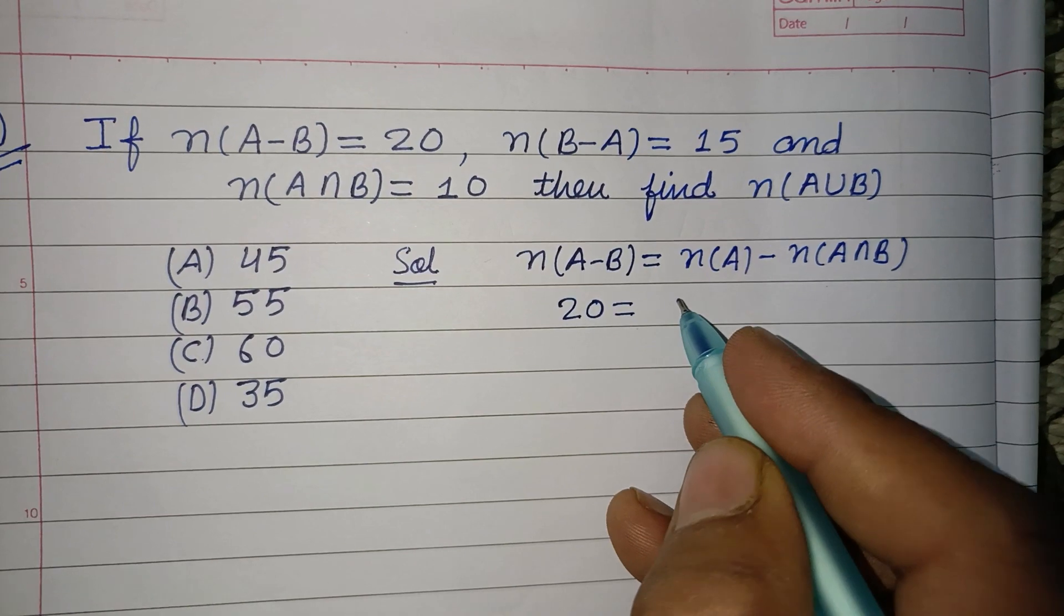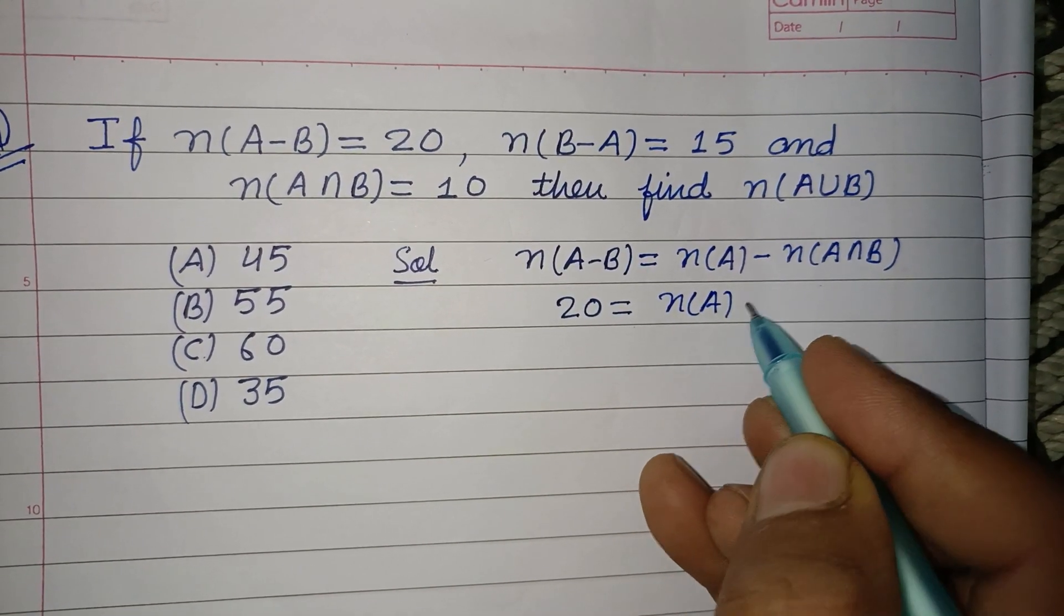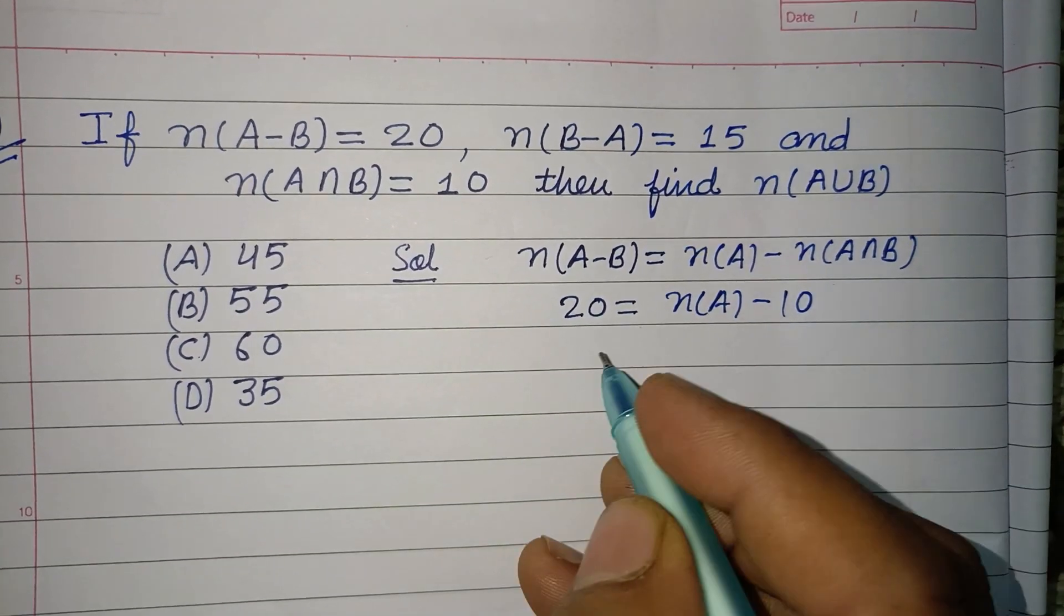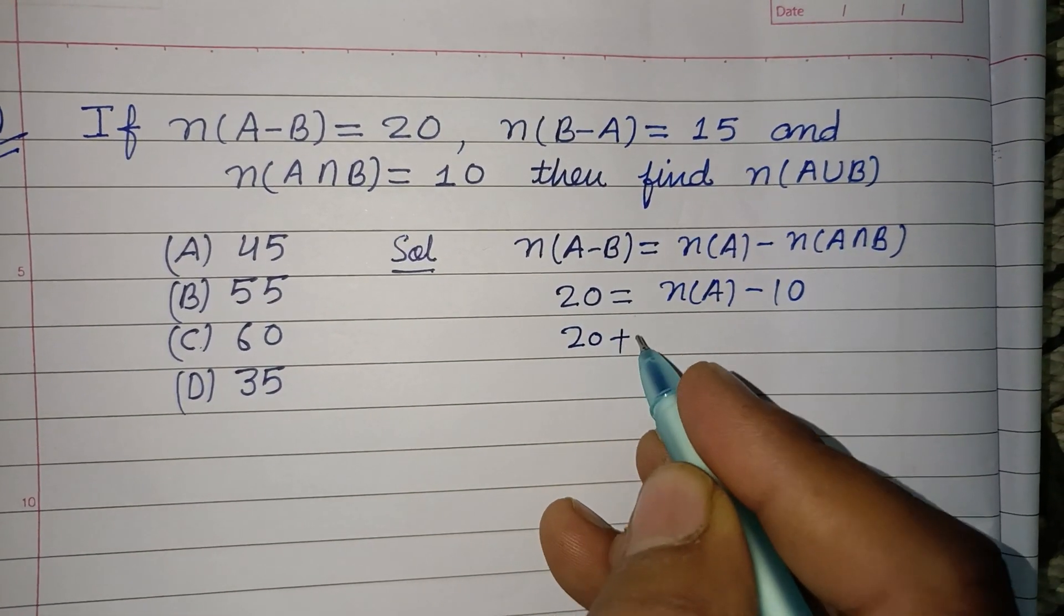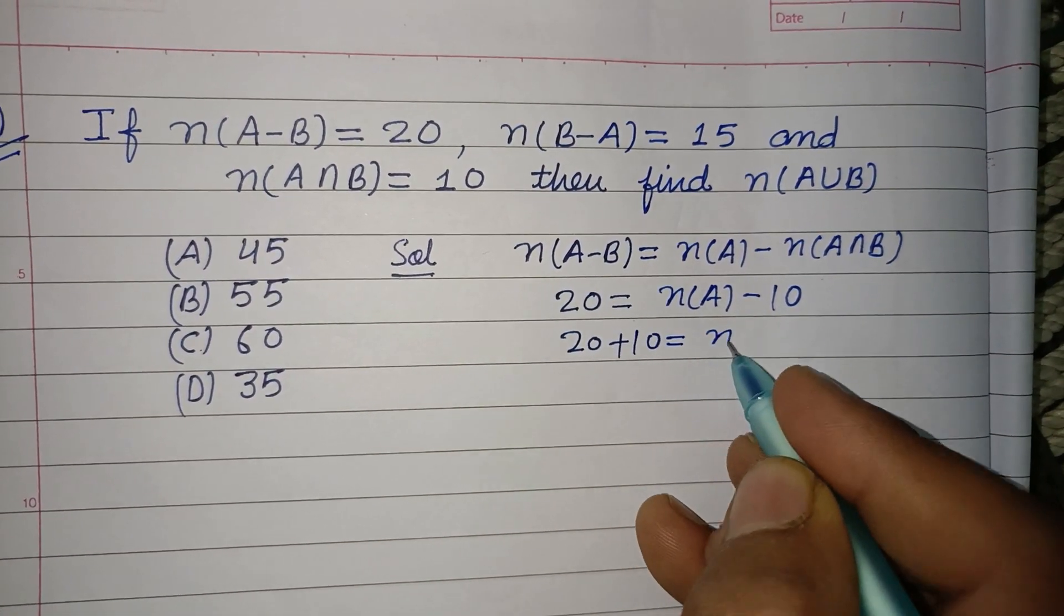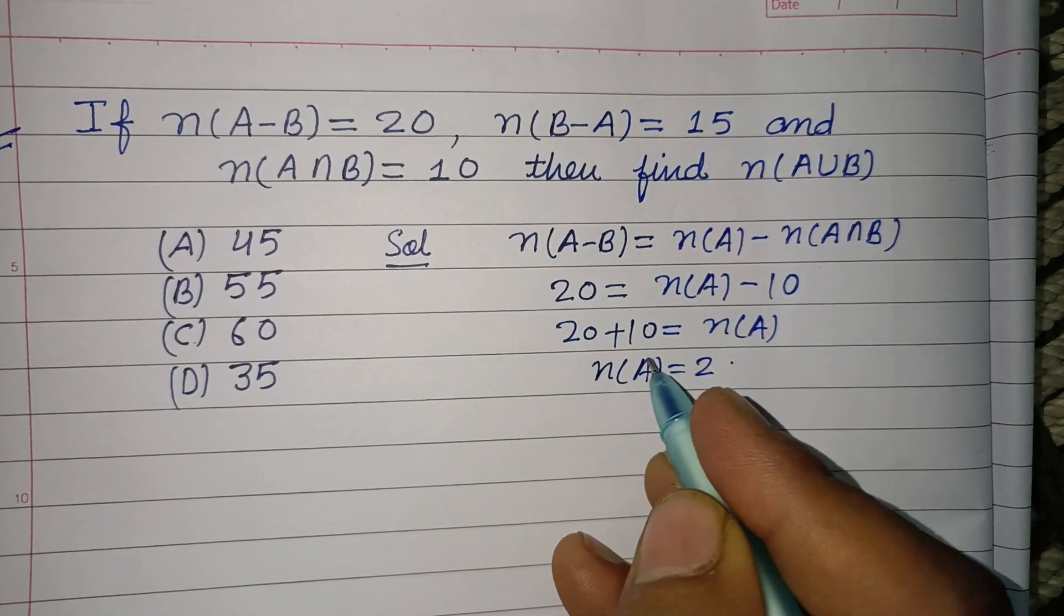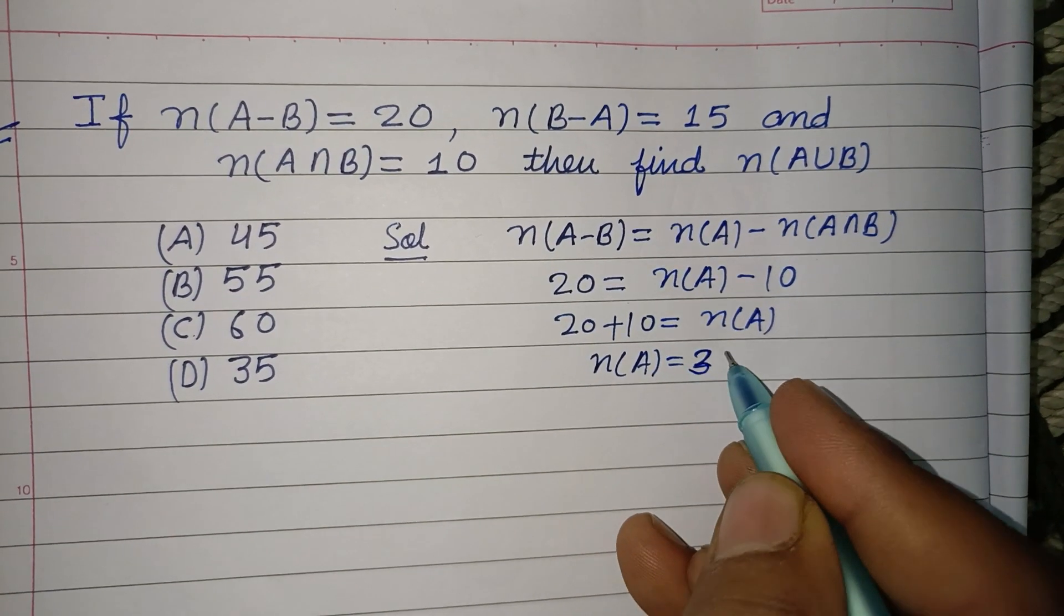It will become positive, so n(A) equals 20 plus 10, which is 30.